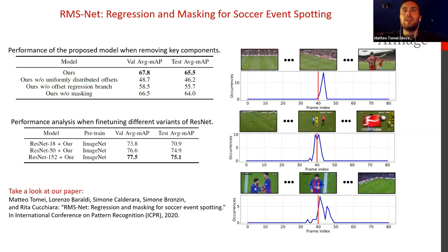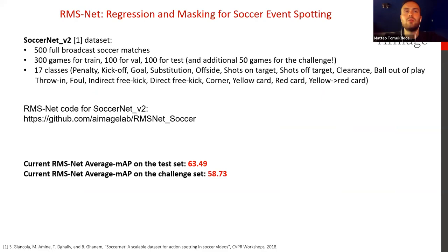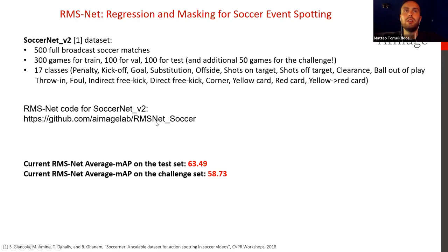On the right, we see some qualitative results. In blue, we have the number of times a frame is predicted as a spot compared to the ground-truth spot highlighted in red. If you are interested in more details, please check our paper, RMSNet: Regression and Masking for Soccer Event Spotting. Finally, I would like to highlight more recent results on the SoccerNet V2 dataset. We reached 63.49 average mean average precision on the test set, and 58.73 on the challenge set currently. If you want to try our code, improve it, or use it for the challenge, here is the link to the code.